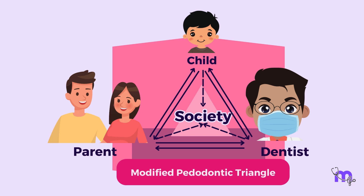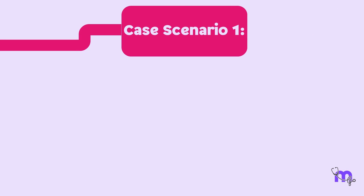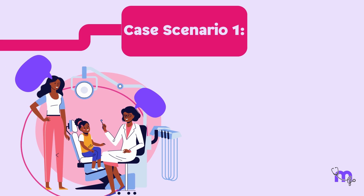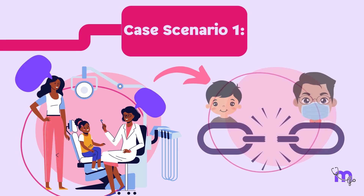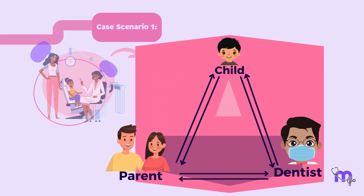Any variation in the interaction between the dentist, child, and parent leads to a change in the shape of the triangle. In scenario 1, we have a parent who always answers on behalf of the child. The parent is overindulgent or overprotective, thereby interrupting the communication between the child and the dentist. This is depicted as an isosceles triangle, where the patient or child is passive.